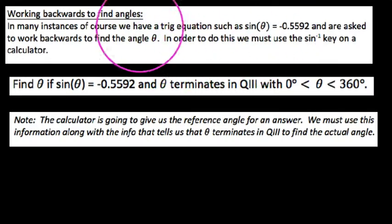In order to do this, there are lots of times when we have a trig equation and we want to work backwards to find the angle. In order to do this, we have to undo the trig function itself. In this instance, undo sine, we can use this little sine negative 1 key on a calculator, and this is just our sine inverse key.